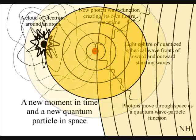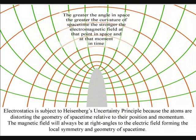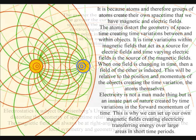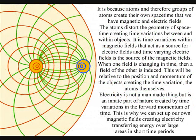A time-varying electric field acts as a source of a magnetic field and the time-varying magnetic field is the source of electric fields. When either field is changing in time, then a field of the other is induced. This will be relative to the position and momentum of the objects creating the time variation, the atoms themselves.